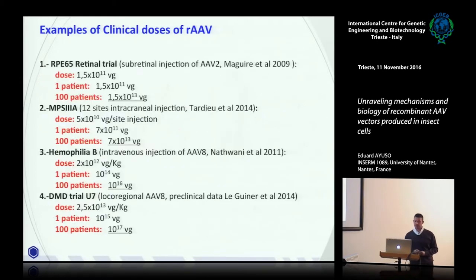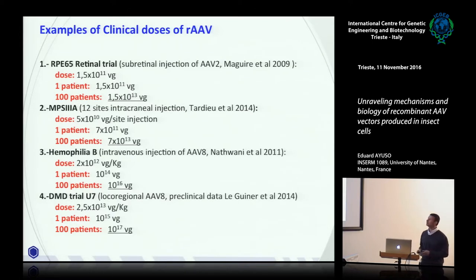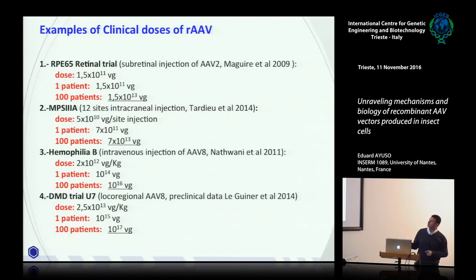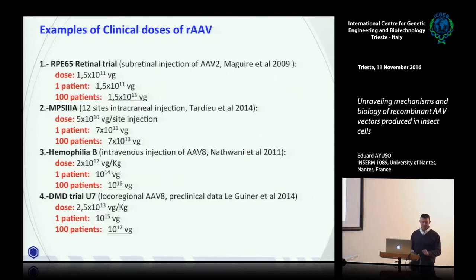To put these numbers in perspective: for an eye trial injecting one retina, one patient requires about 10¹¹ vectors — so 100 patients needs 10¹³ vectors, which sounds reasonable. For nervous system applications with multiple injection sites, one patient is around 10¹² vectors. However, when we move to systemic applications like hemophilia trials — about 2×10¹² vector genomes per kilogram — a mean patient needs about 10¹⁴ vectors. For 100 patients, that becomes 10¹⁶ vector genomes, which becomes very uncomfortable.